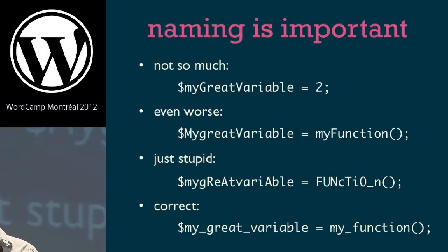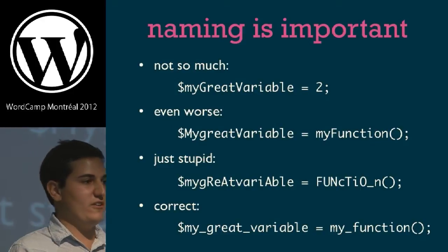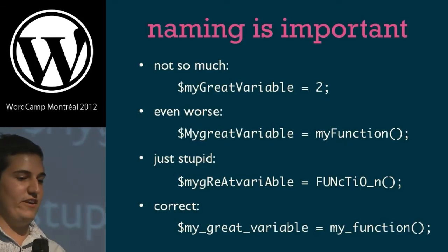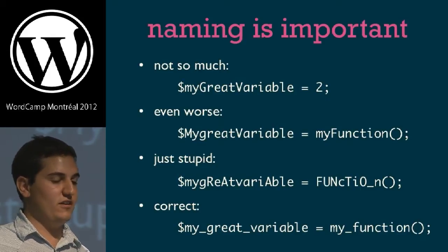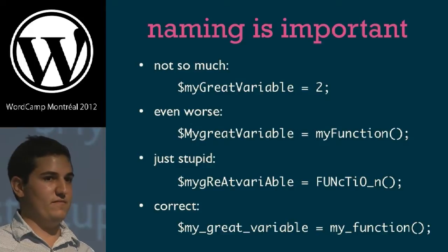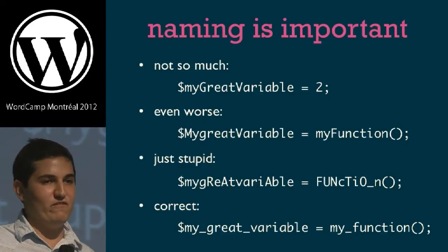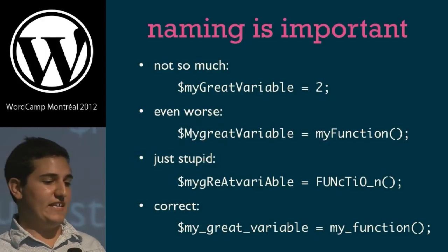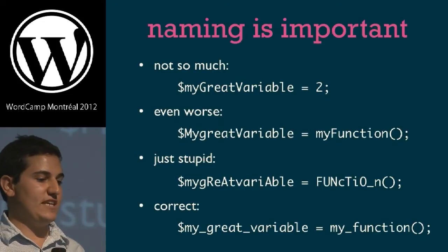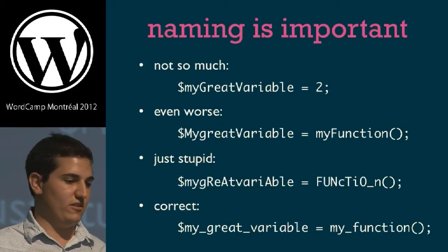Naming is really important — don't name things haphazardly. If other people are going to read your code, try to make it very logical so people know what your variables and functions are. Not like 'option_one', 'option_two', or 'var_two' — nobody's going to know what that is. Try to name your variables in a way that makes sense. Follow the standard which says you separate words with underscores and you don't camel case or use uppercase.